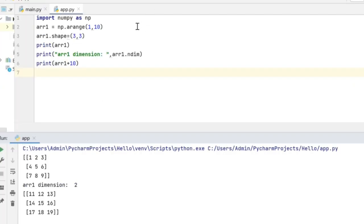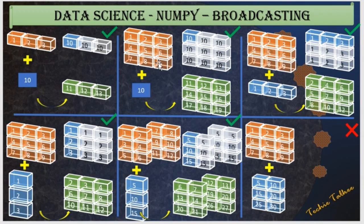Consider this example where I have a 2D array ARR1 with three rows and three columns, holding values from 1 to 9. I am adding 10 to this 2D array. Since the 2D array is three rows by three columns, NumPy conceptually creates a 2D array of three rows and three columns, broadcasts the value 10 into it, and performs element-wise addition: 1 plus 10 gives 11, 2 plus 10 gives 12, 3 plus 10 gives 13, and so on.